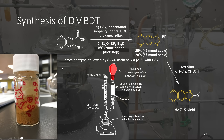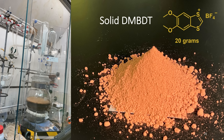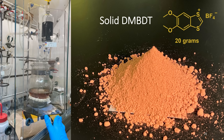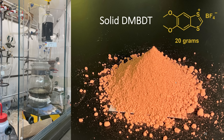The way that DMBDT is prepared is relatively straightforward, starting with anthranilic acid. This is what this chemistry looks like, and here's a large-scale synthesis of our product at 20 grams.